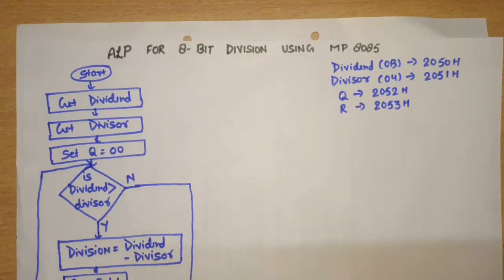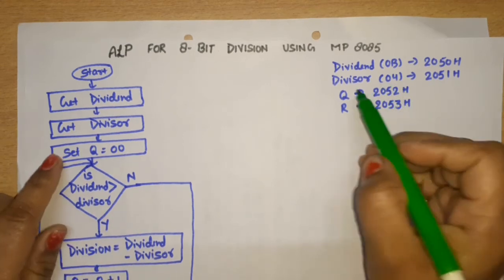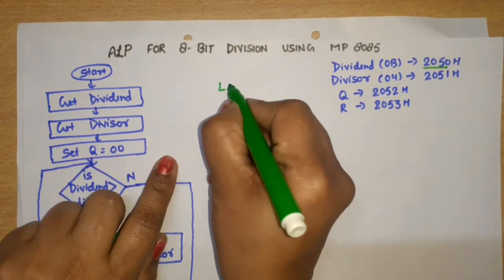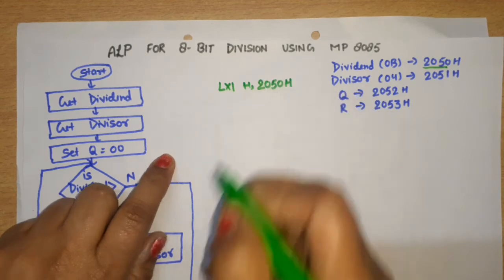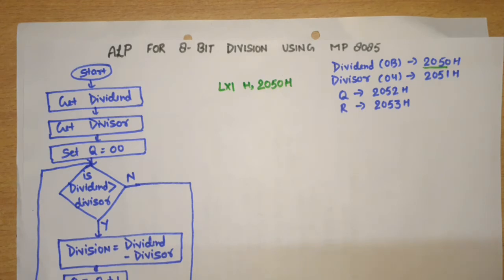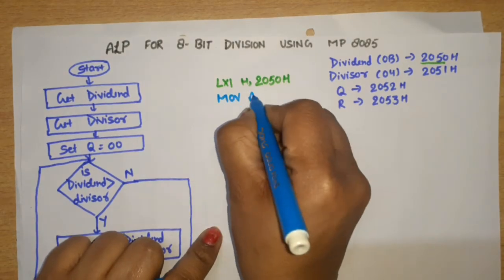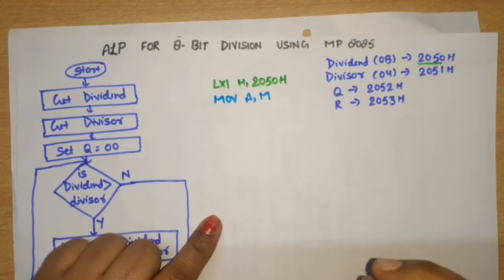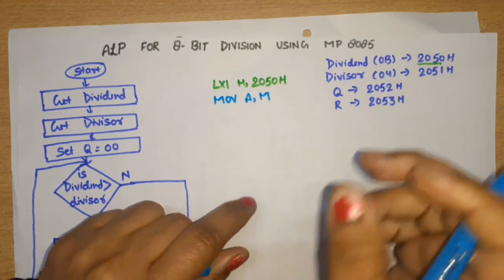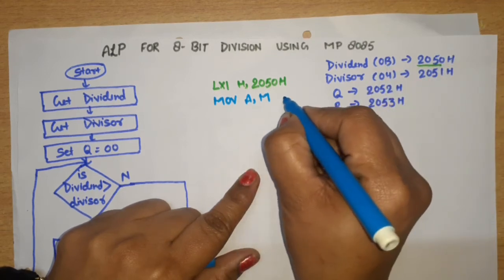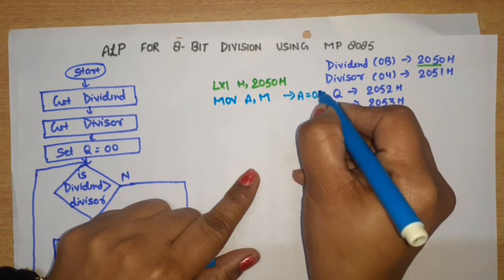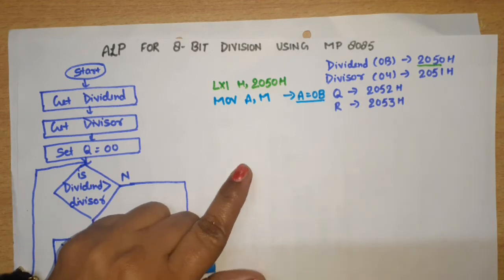Now let's write the instructions. First, get dividend from 2050H: write LXI H, 2050H — this loads 2050 into the HL pair. Then write MOV A, M — this copies the content of memory location 2050H (pointed to by HL pair) into the accumulator. So the accumulator value becomes 0B, which is the dividend.